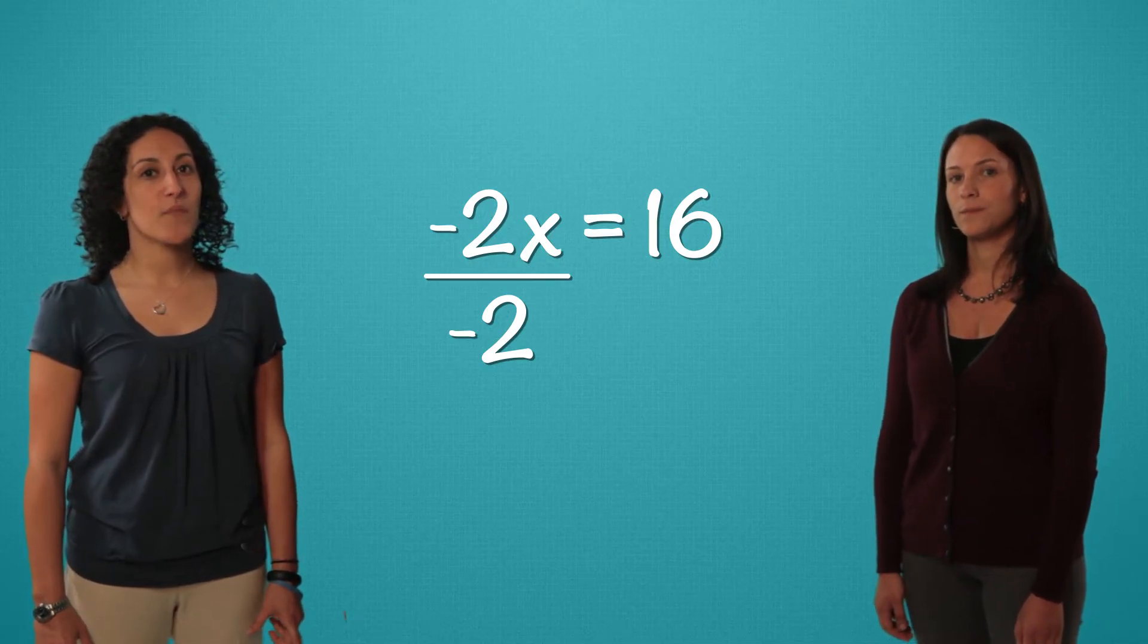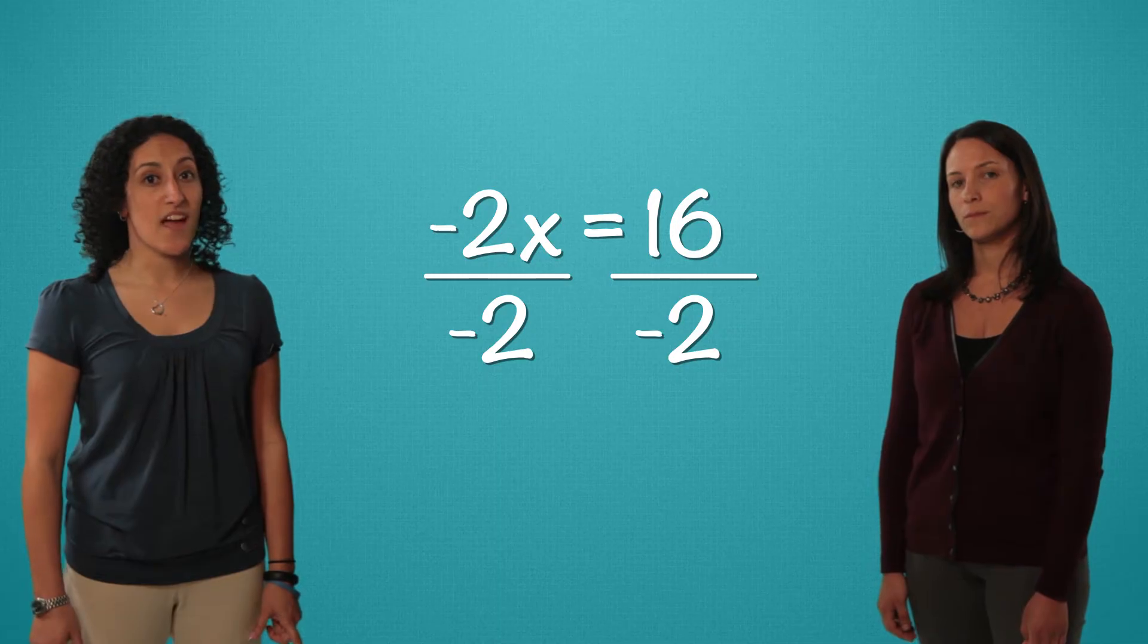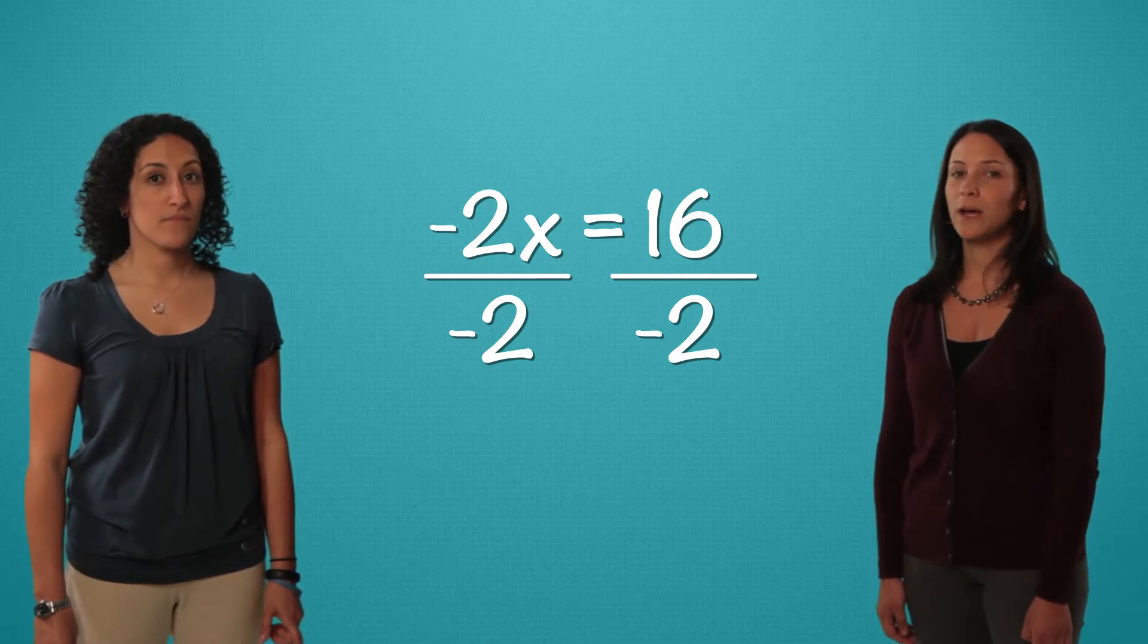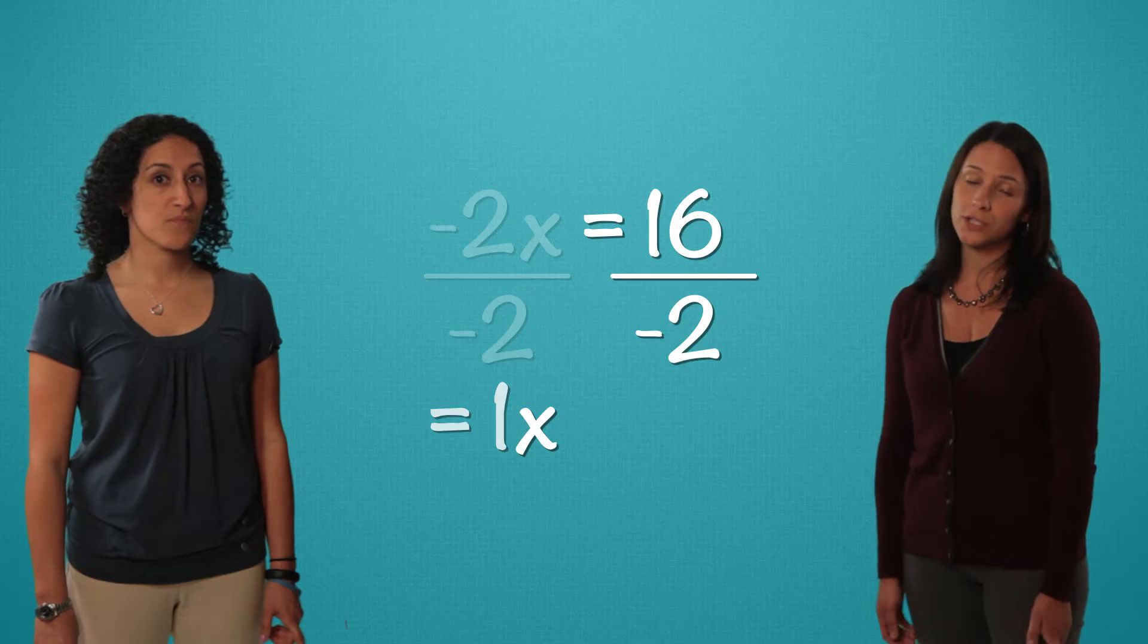We also keep it in balance by dividing by negative 2 on this side. Negative 2 divided by negative 2 is 1, so we get 1x or just x.